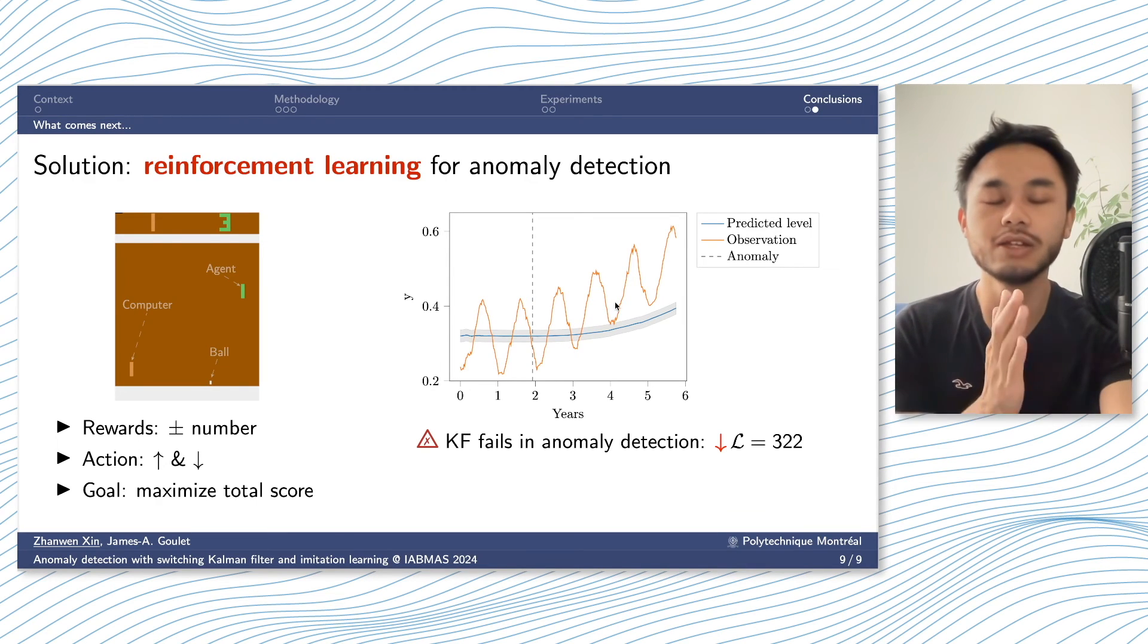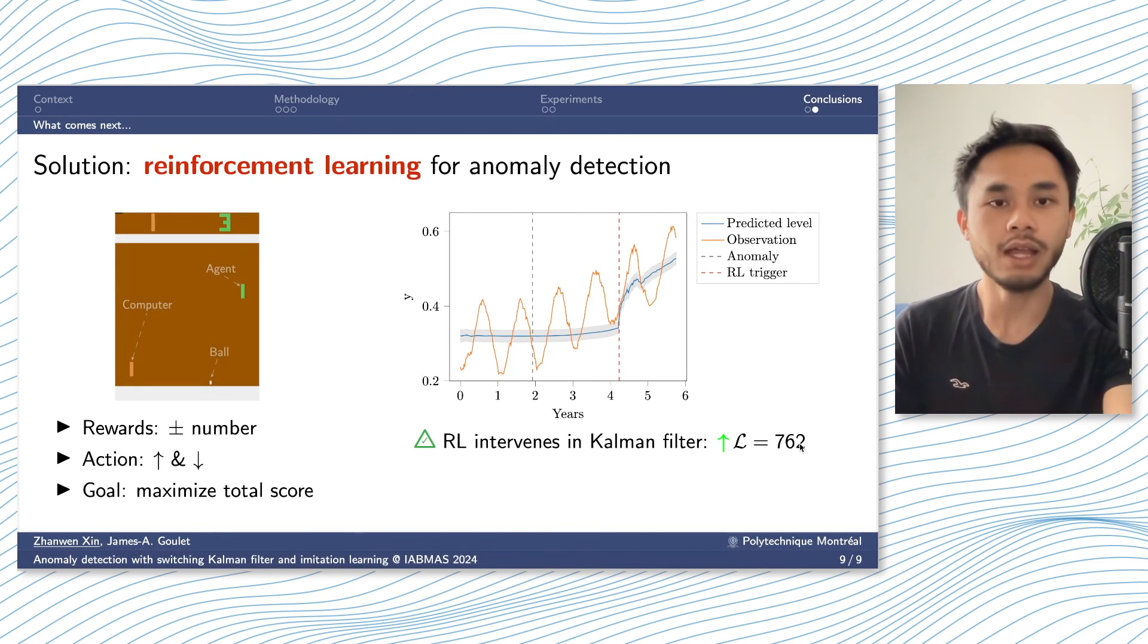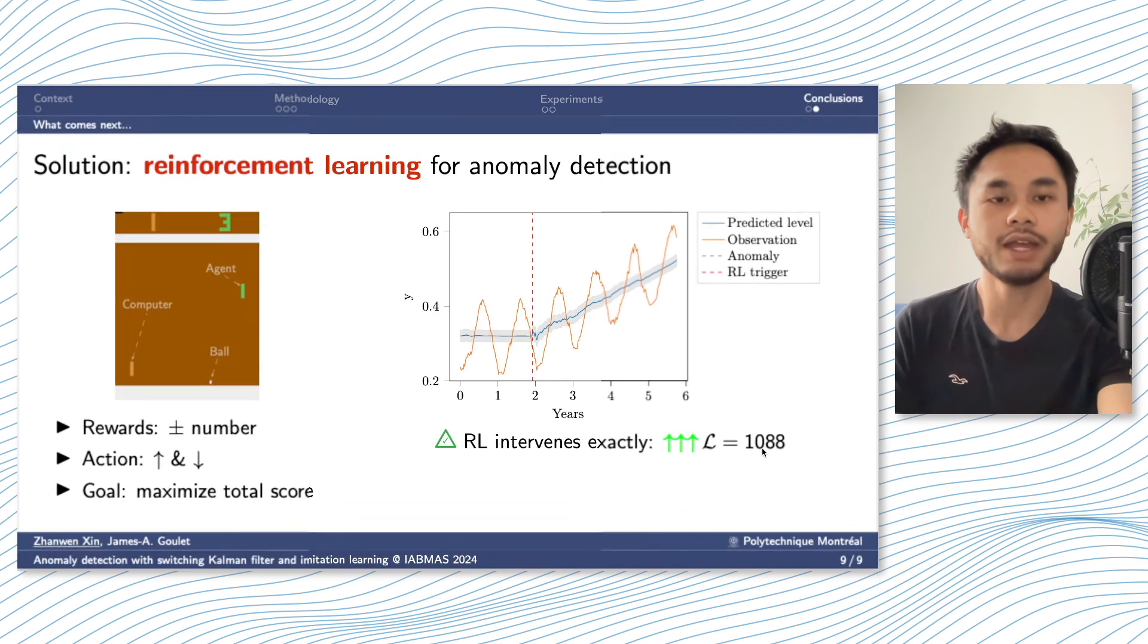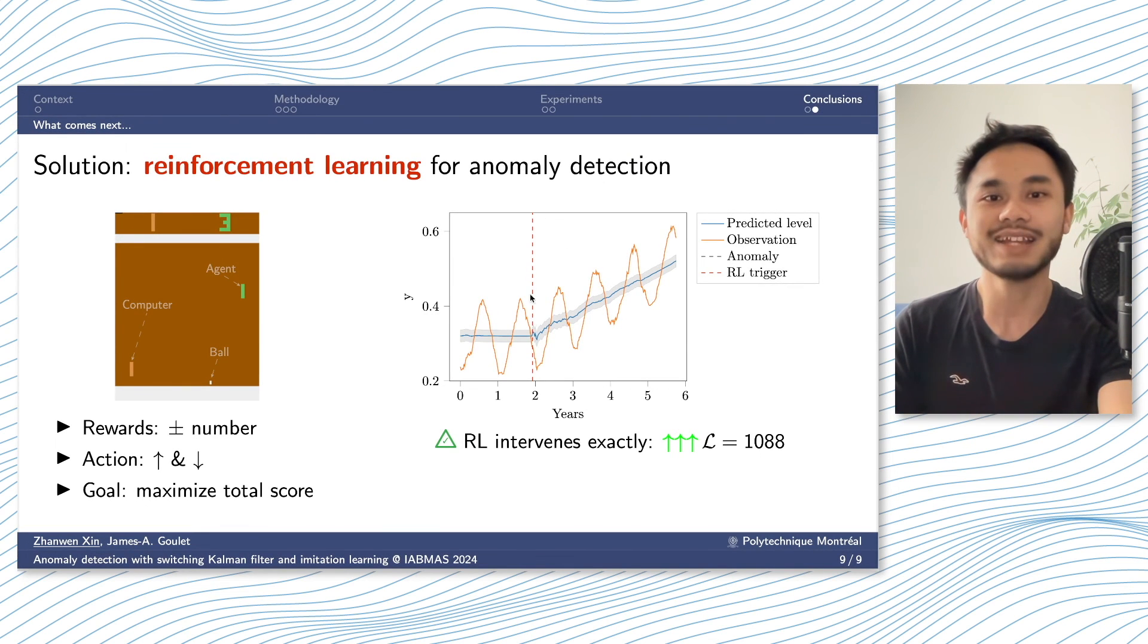When the time series becomes non-stationary and anomalies happen, if the agent still decides to do nothing, not triggering any alarm, the prediction would be really off from the observation and the reward defined by the likelihood would be lower. If the agent explores to trigger an alarm here to intervene the model so as to adapt the model to our observation, you will get a higher likelihood as reward. And when you explore to trigger an alarm earlier, and this is a better triggering, the likelihood would be higher. And when you trigger an alarm exactly at the timestamp where we introduce this anomaly, it will get the maximum likelihood as 1088.